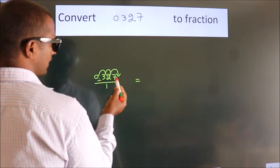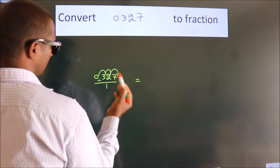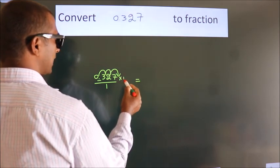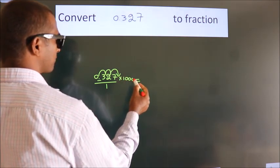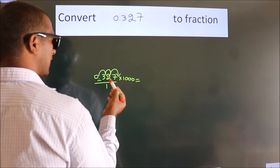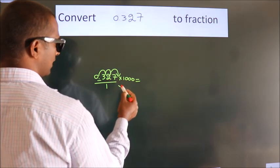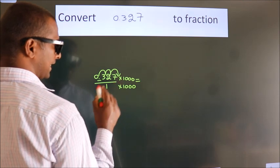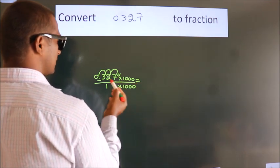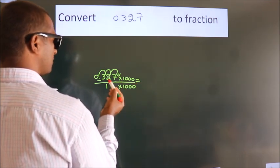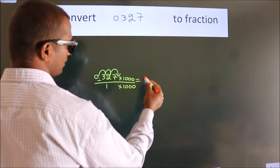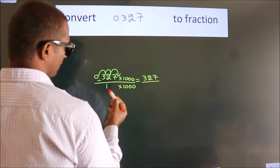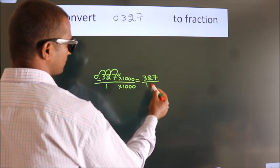To move this decimal after 3 numbers, we have to multiply it with 1000. Whatever you are multiplying in the numerator, in the denominator also do the same. 0.327 × 1000 = 327. 1 × 1000 = 1000.